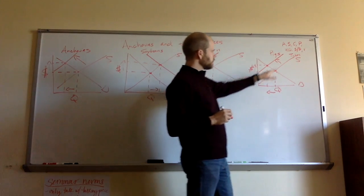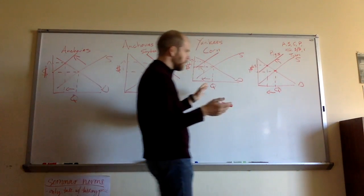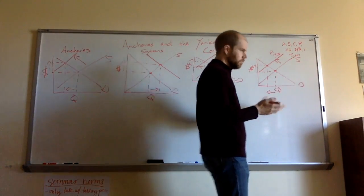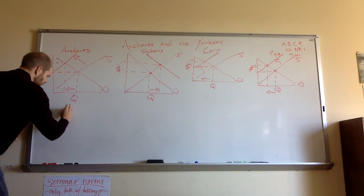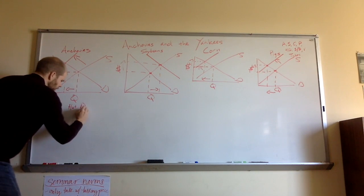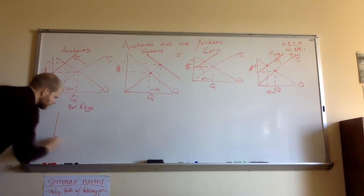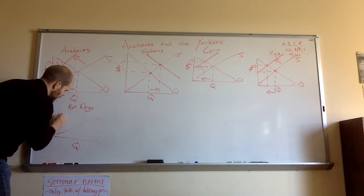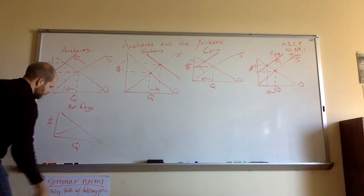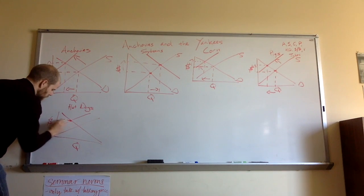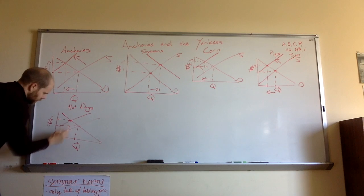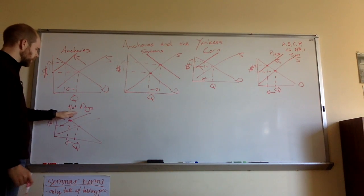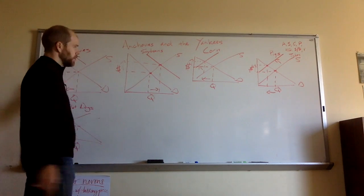The same thing is going to happen to the hot dog market — corn goes into pigs, and pigs go into hot dogs. So if you have supply and demand for hot dogs, the same thing is going to happen. Pork is an input — it's going to reduce supply. Supply decreasing is going to raise the equilibrium price for hot dogs and lower the quantity of hot dogs produced. Hot dogs, pigs, corn, soybeans, anchovies — are we getting closer to Yankee baseball games? Yes, I think so.